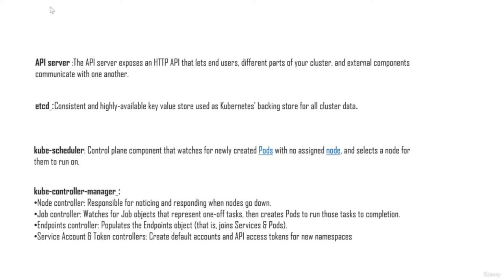Now let's talk about the four major components that make up your control plane. They include the API server, the etcd, the kube-scheduler, and the kube-controller-manager. The API server exposes an HTTP API that lets end users and different parts of your cluster communicate with each other. Whenever you're sending a request to your cluster, it goes to your API server, and the API server decides where your particular request has to go. The etcd is a consistent and highly available key store used by Kubernetes for backing store for all your cluster data.